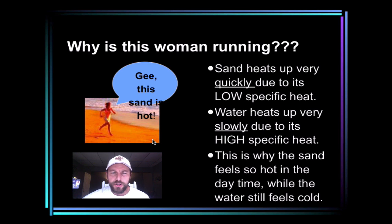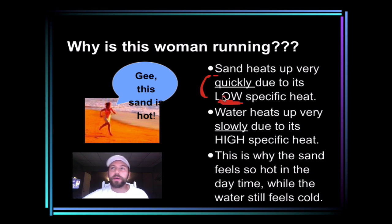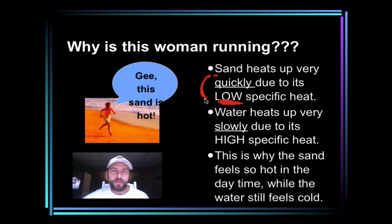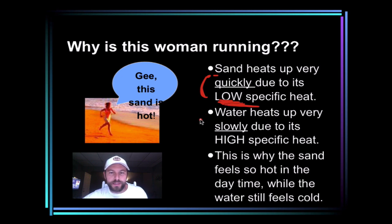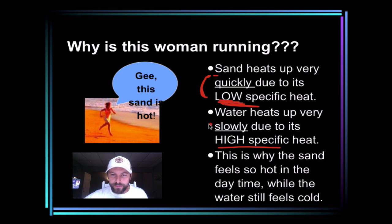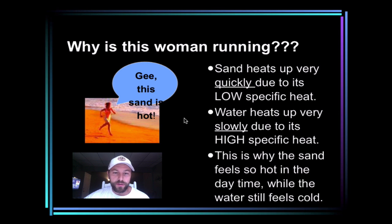You see many people, when you get to the beach, they're running on the hot sand. The reason is that sand heats up very quickly because it has a low specific heat. So it could be 95 degrees outside at around 11 or 12 o'clock because the sand has heated up very quickly. Then you go running across the sand into the water and notice the water is maybe only 65 or 70 degrees. That's because water has a high specific heat, so it takes a very long time for it to heat up. This is why sand feels so hot in the daytime while the water still feels relatively cold.